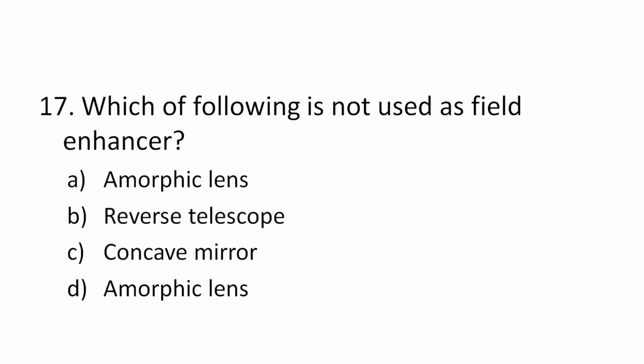Question 17: Which of the following is NOT used as a field expander? Options: anamorphic lens, reverse telescope, concave mirror, anamorphic lens. The correct answer is concave mirror. Anamorphic lenses and reverse telescopes are used as field expanders, but a concave mirror produces a magnified image and is not used as a field expander.